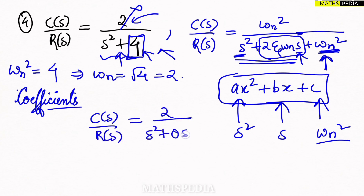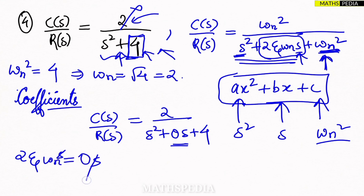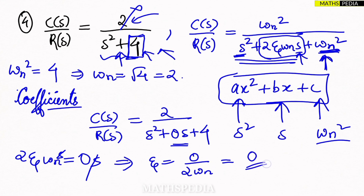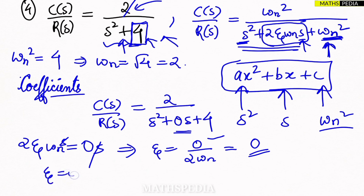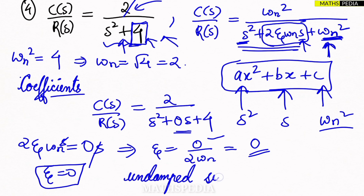We can write the transfer function as C(s)/R(s) = 2 / (s² + 0·s + 4), making the coefficient of s equal to zero. Comparing: 2ζω_n = 0, so ζ = 0 / (2 × ω_n) = 0. Since zeta equals zero, this is the undamped system. Whenever a term is missing, always consider its coefficient as zero when comparing.